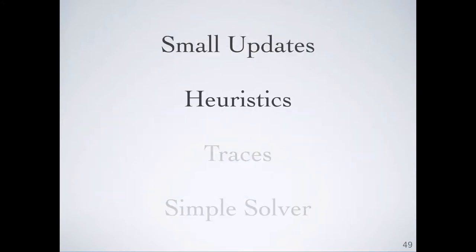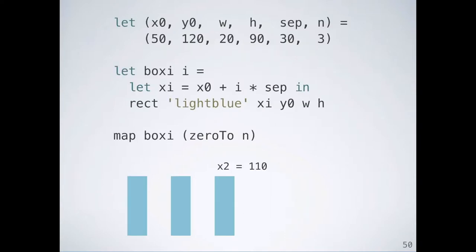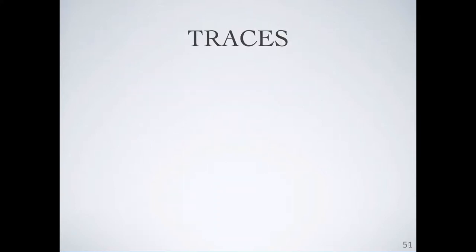So we've talked about how we constrain the program synthesis search space to small updates, and we've talked about our heuristic for choosing exactly which program location to change. But we haven't talked about how the system knows that this expression here is the relevant expression. How does the system discover that the output value for the third box's x value came from this formula?